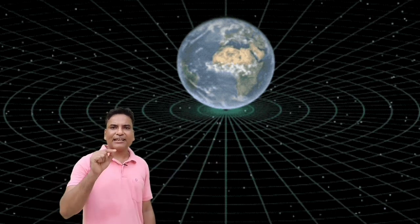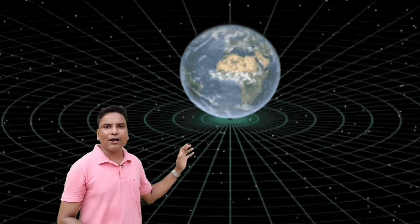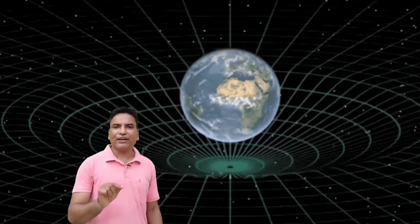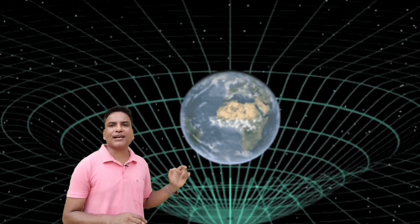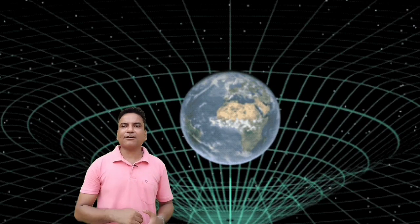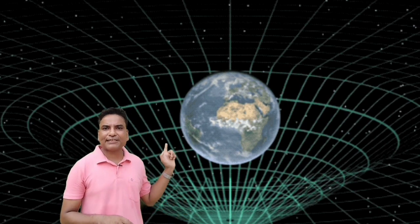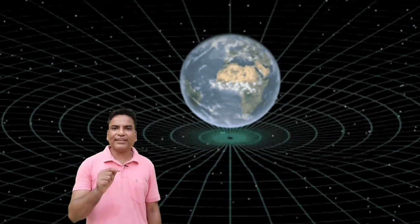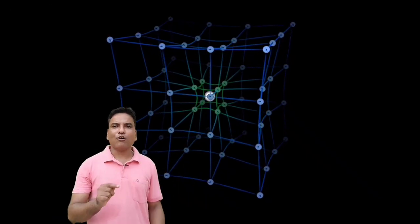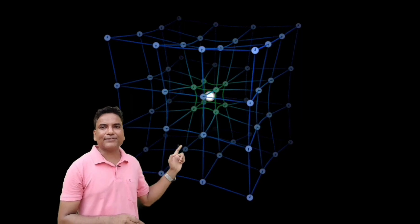And this space-time fabric exists everywhere in our world. When a massive celestial body, such as Earth, comes to the space-time fabric, then the celestial body will make a curve in space-time fabric. And Einstein assumed this curve as space-time curvature. Actually, space-time curvature does not happen like this. It happens from all sides of the massive object like this.